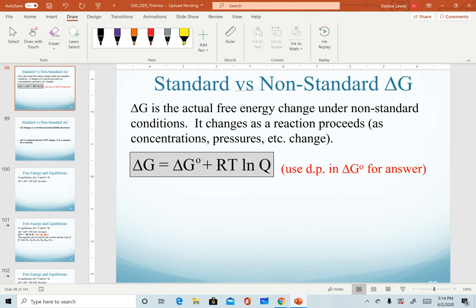Now that we've described the differences between the standard and non-standard delta G values, we can start to put all of this information together into equations to relate the calculation of one to the other.